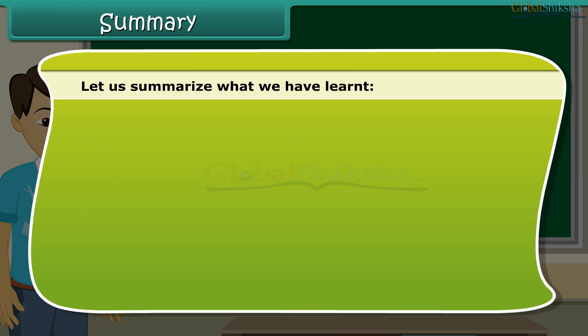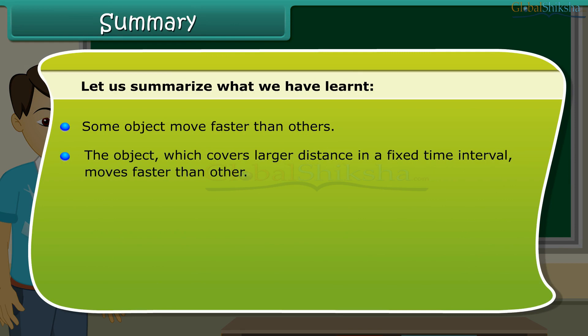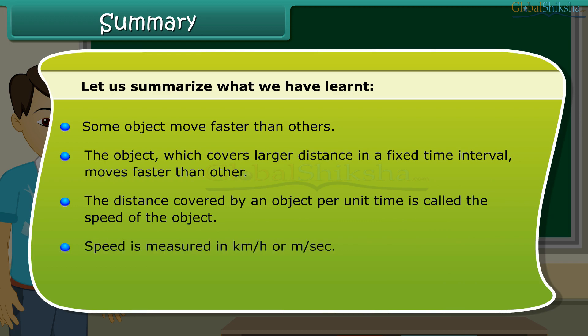Let us summarize what we have learned. Some objects move faster than others. The object which covers larger distance in a fixed time interval moves faster than others. The distance covered by an object per unit time is called the speed of the object. Speed is measured in kilometer per hour or meter per second. Speedometer measures the speed of a vehicle and odometer shows the distance covered by it.